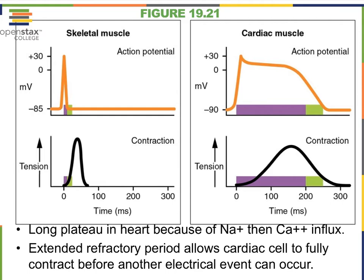Here we see the comparison of action potentials in skeletal muscle versus cardiac muscle. In skeletal muscle, the resting membrane potential is minus 85 to minus 90, very similar to cardiac muscle. We reach a peak about 100 millivolts above resting, then immediately after the peak, potassium channels open and repolarization follows immediately. In cardiac muscle, by contrast, depolarization persists for quite a while.